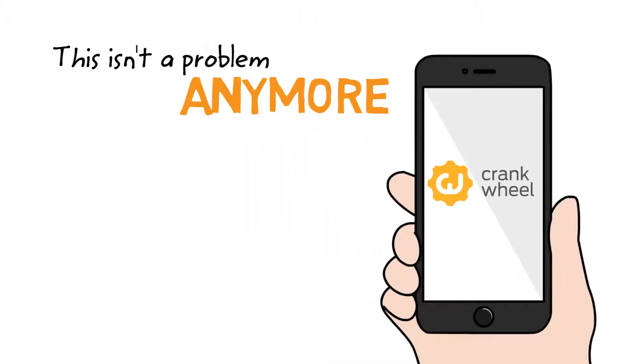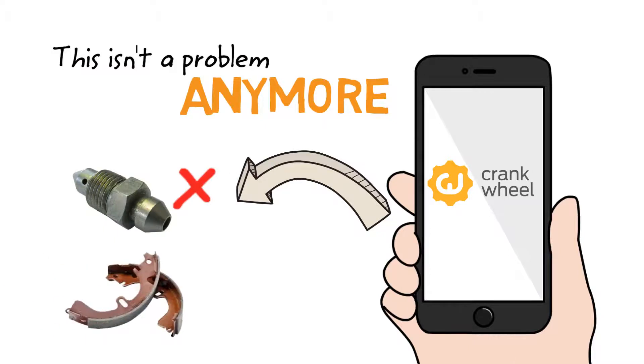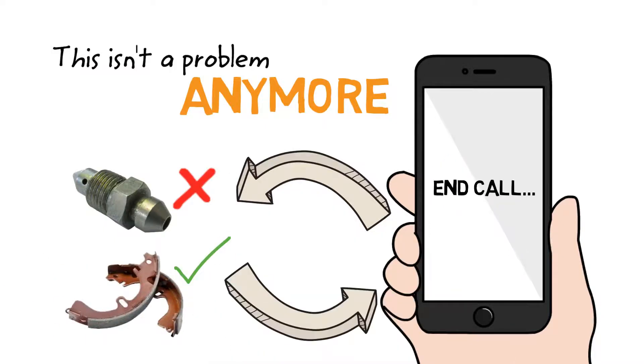But this isn't a problem anymore now that Graham uses Crankwheel to visually confirm the order with John on his smartphone before ending the call.